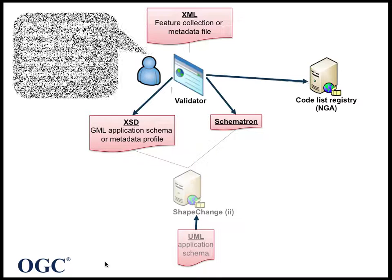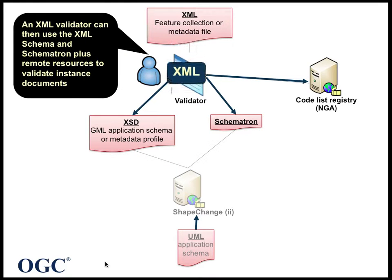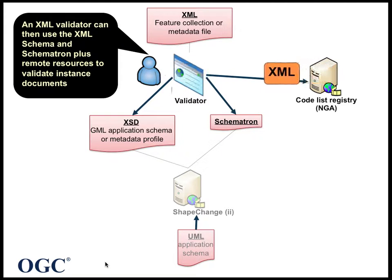To validate an instance document, the validator first validates the files against the XML schemas of the namespaces used in the instance document. In the second step, the validator applies each Schematron assertion against the XML instance. Some of the assertions include references to remote XML documents in a codelist or units of measurement registry. These resources are accessed by the validator as needed and are then used in the validation process too.